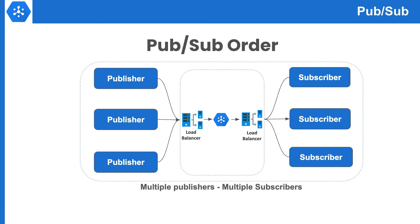Sometimes order can be achieved during data processing. Users can include a sequence token in messages or add the event time in message metadata. Later during message processing, you can group data according to event time instead of processing time. Google's big data processing product Dataflow allows streaming data processing in a very efficient manner and can also help with message ordering.